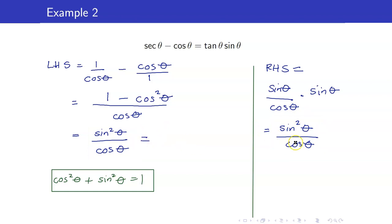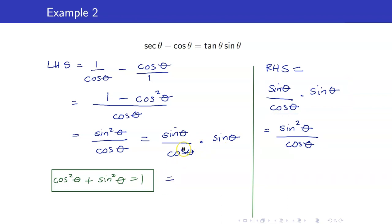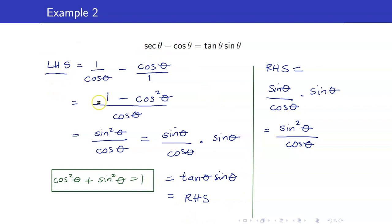Or you may want to trace your way back. Sine squared theta over cosine theta can be written as sine theta over cosine theta times sine theta, which equals tangent theta times sine theta, which is your right-hand side. But the more formal way of proving this is starting from one side and ending up at the other side.